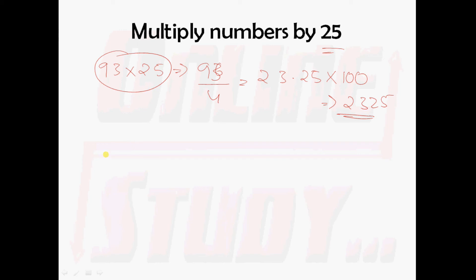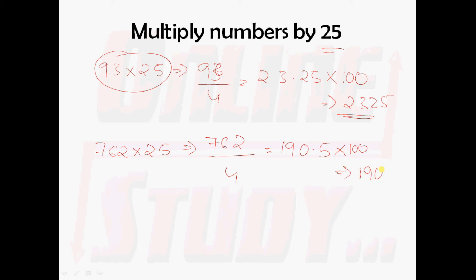We shall take one more example: 762 into 25. This 762 should be divided by 4. You will get 190.5, and this 190.5 should be multiplied with 100. So finally you will get 19050. That is, 762 into 25 is 19050.